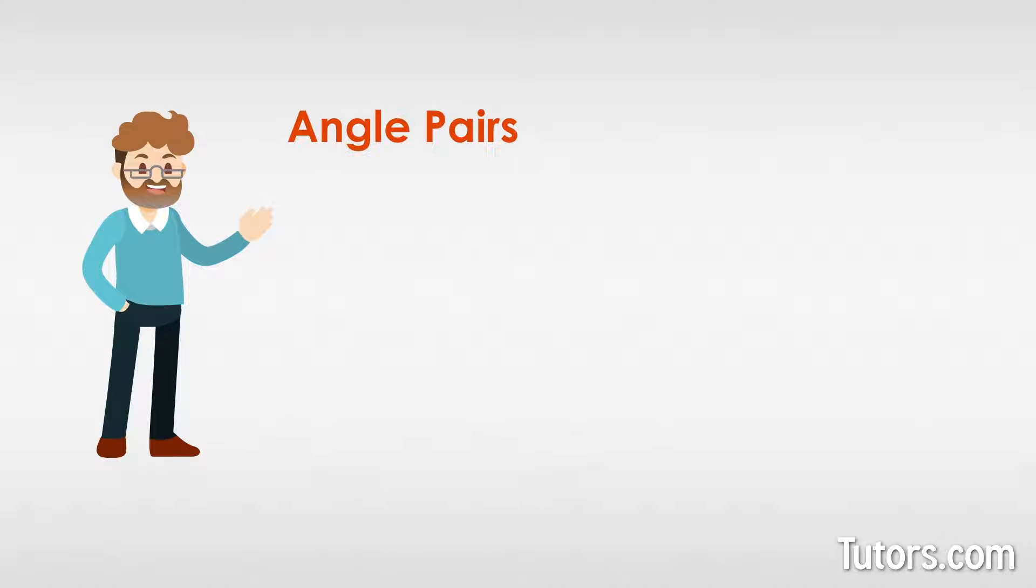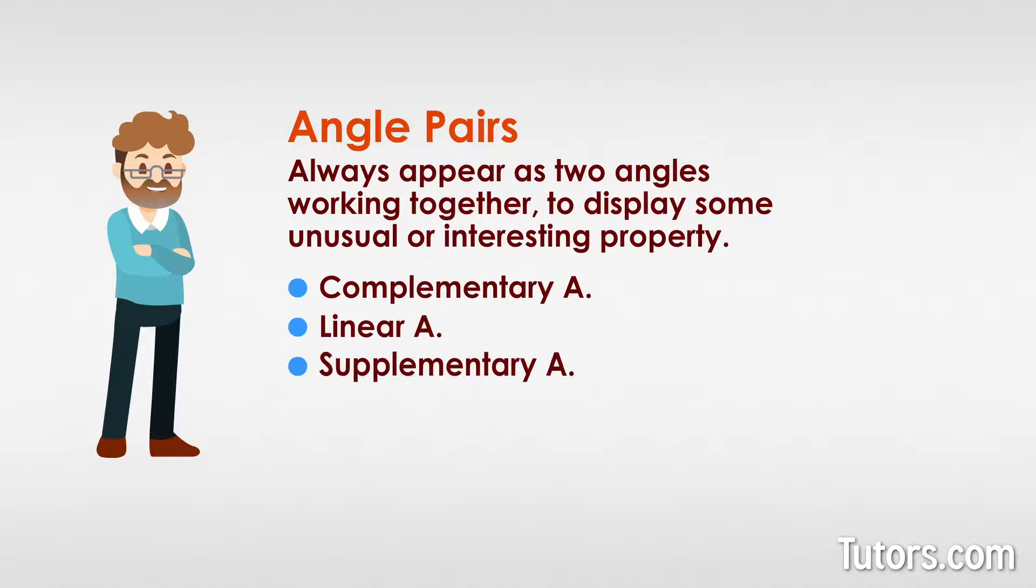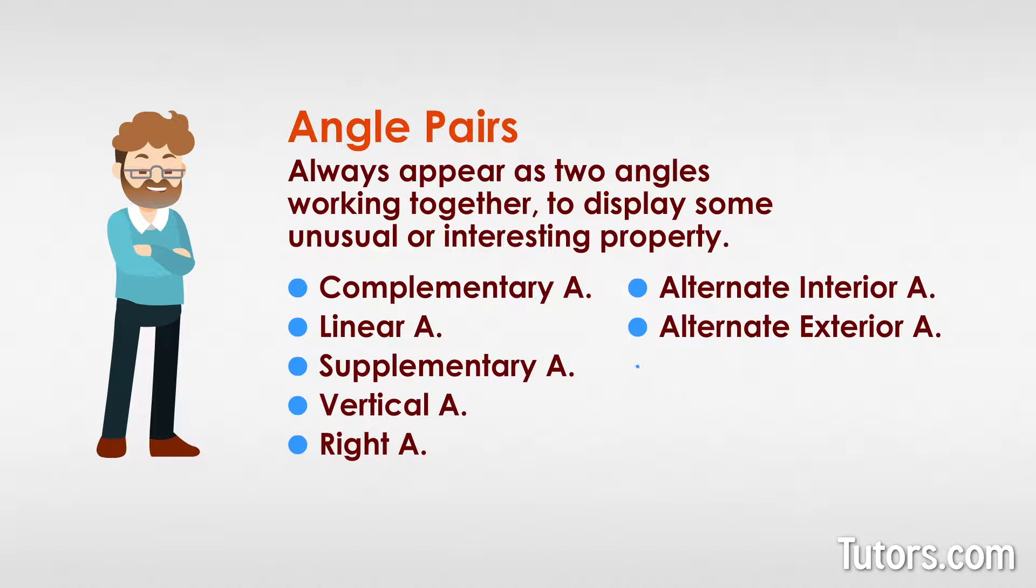Today's lesson is on angle pairs. Angle pairs are called that because they always appear as two angles working together to display some unusual or interesting property. In this lesson, we will look at nine different types of angle pairs.